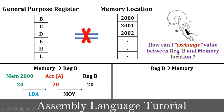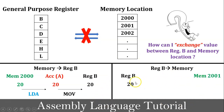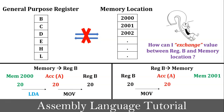The next task is storing a value from register B to a particular memory location. As per the question, value 20 is to be stored into memory location 2001 from register B. But there is no direct instruction available in the 8085 microprocessor. So first I must use the MOV instruction to copy value 20 from register B to accumulator A. After that I will use the STA instruction to store data from the accumulator to memory location 2001. So finally, value 20 is stored at memory location 2001 from register B.